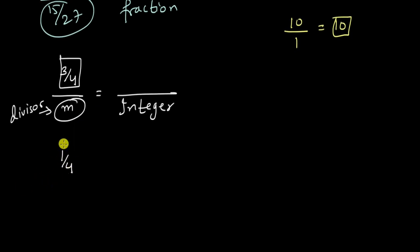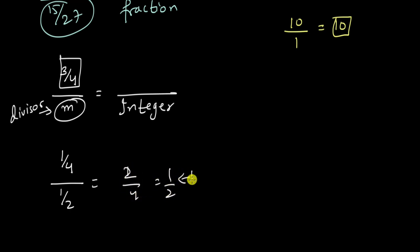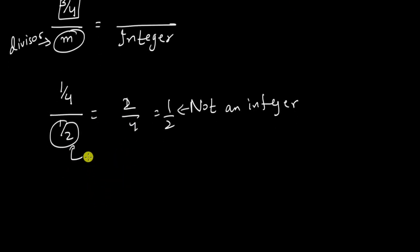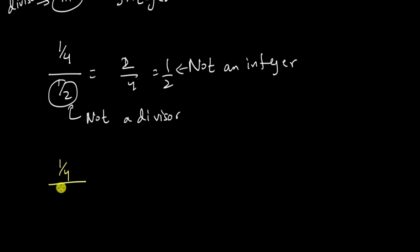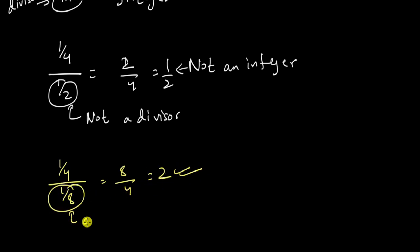Now we understand what a divisor for a fraction is — let's see some examples. What is a divisor of 1/4? Is 1/2 a divisor of 1/4? Let's see: 1/4 divided by 1/2 gives us 2/4, which is one half. This is not an integer, so 1/2 is not a divisor. What about 1/8? If we divide 1/4 by 1/8, we get 8/4, which equals 2. This is an integer, so 1/8 is a divisor.